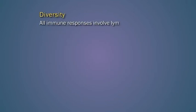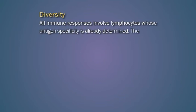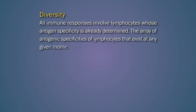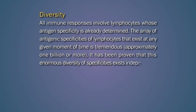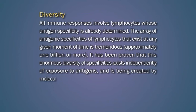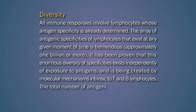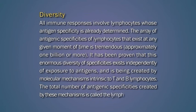The second feature is diversity. All immune responses involve lymphocytes whose antigen specificity is already determined. The array of antigenic specificities of lymphocytes that exist at any given moment of time is tremendous, approximately one billion or more. It has been proven that this enormous diversity of specificities exists independently of exposure to antigens and is created by molecular mechanisms intrinsic to T and B lymphocytes. The total number of antigenic specificities created by this mechanism is called the lymphocyte repertoire.